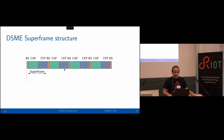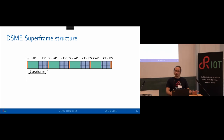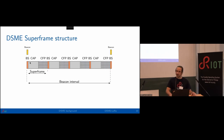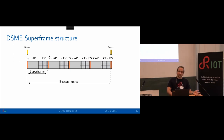To understand how DSME works: a PAN coordinator defines a superframe structure that repeats indefinitely. A superframe consists of a beacon slot, a contention access period, and a contention free period. Beacon slots are used for synchronization — the PAN coordinator emits beacons at a beacon interval, and other devices listen to synchronize to the superframe structure. Other devices can also join, become coordinators, and transmit in other slots, so we avoid beacon collisions that occurred in standard 15.4.